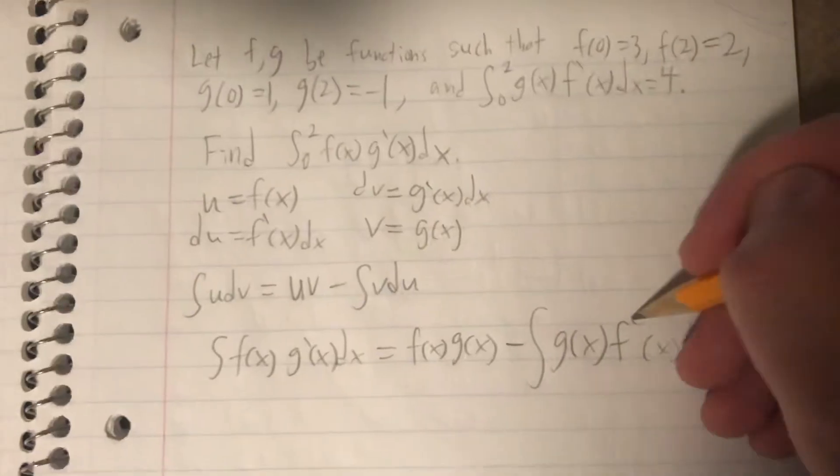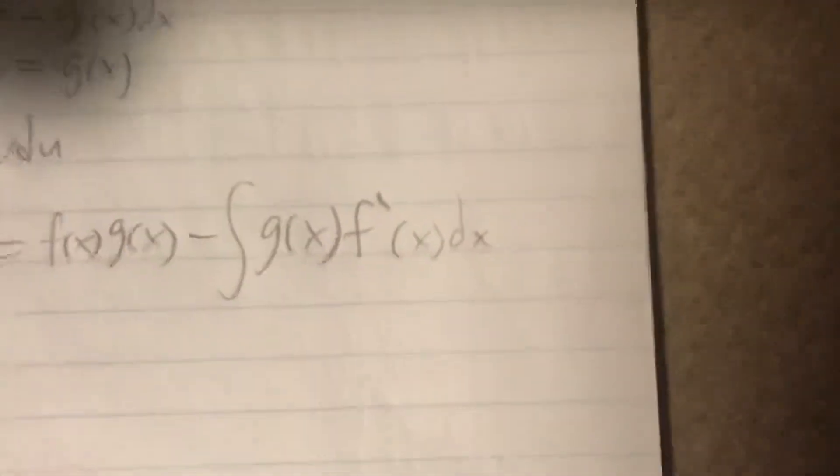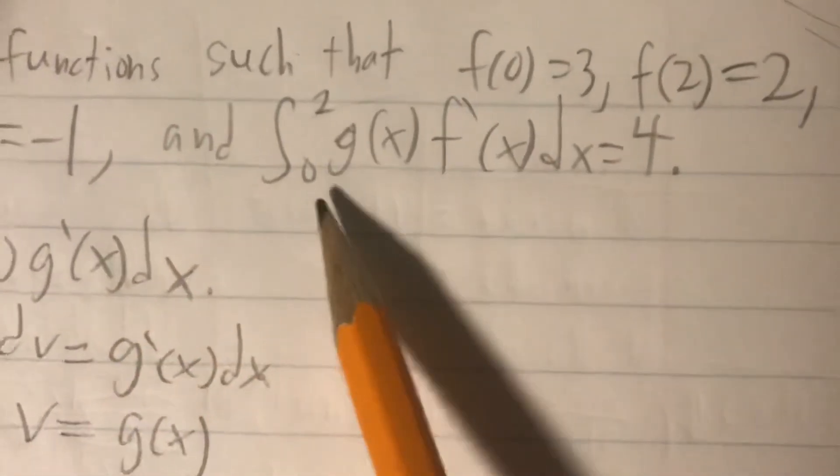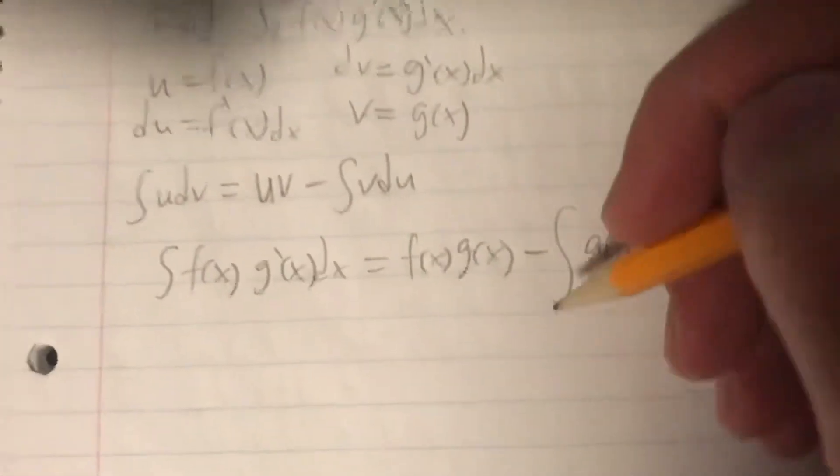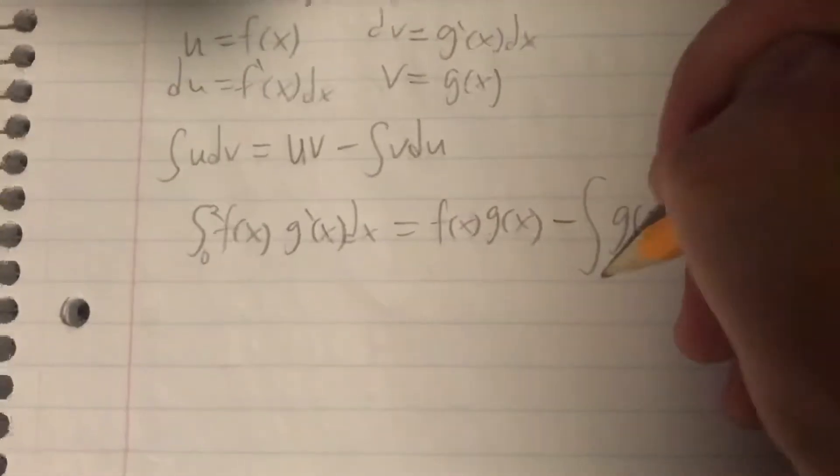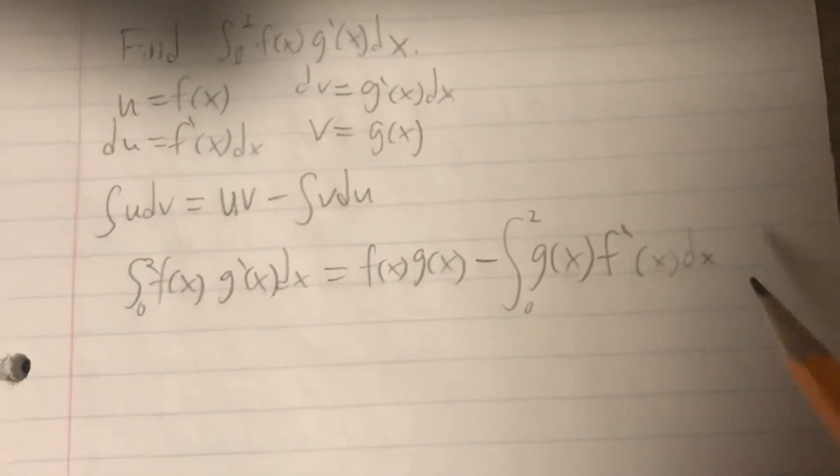Now, if you're observant, then you should notice right away that, hey, this part right here is exactly what we're given up above. We know that the integral of it, with those bounds, is going to be equal to 4. So, we can use that to our advantage. So, if we were to re-add the bounds here, then we'll be able to substitute this whole thing for 4.